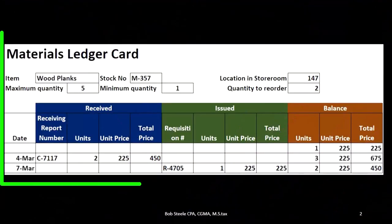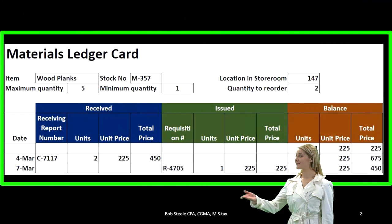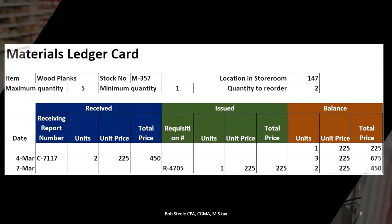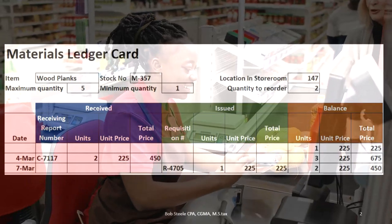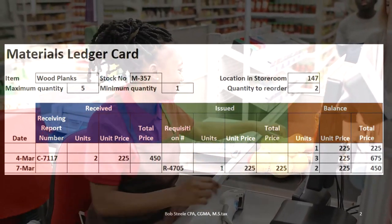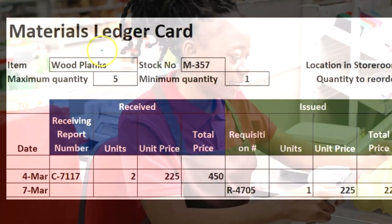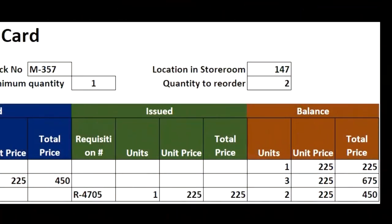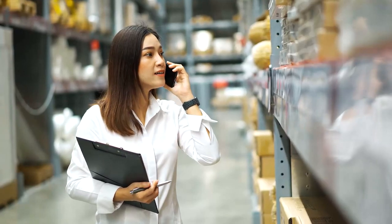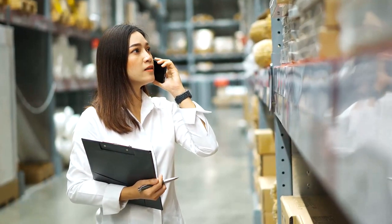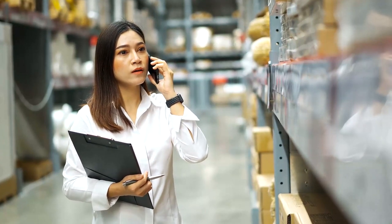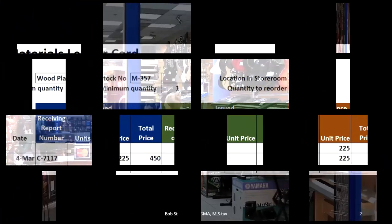This is going to be an example of a materials ledger card, and it's going to look very similar to tracking inventory — we're basically tracking the inventory of materials. If you work with a merchandising company that purchases and sells inventory, we'll have a similar kind of tracking system. In this case, we're using it for one component of the inventory that we make. So if we make guitars, for example, the major component might be wood, and we would have to track that component in a similar way that we'd track entire units of inventory for a merchandising company.